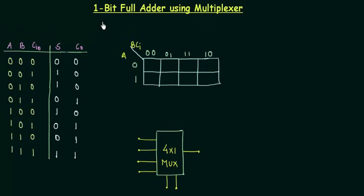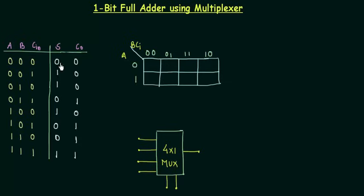In this presentation we will implement a one-bit full adder using a multiplexer. The MUX I'm using is a 4×1 MUX. The first thing we require is the truth table. We are having three inputs: A, B, and Cin. A and B are the two one-bit numbers to add, and Cin is the carry from the previous stage. S is the sum output of the addition, and Cout is the carry output.